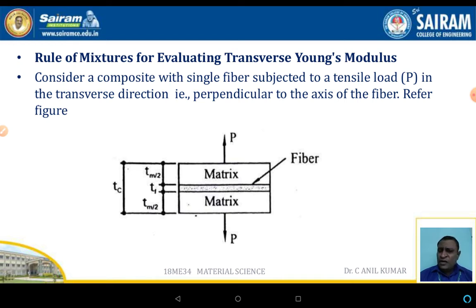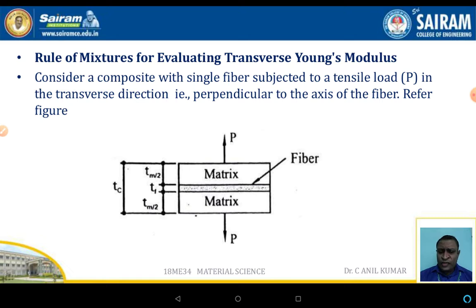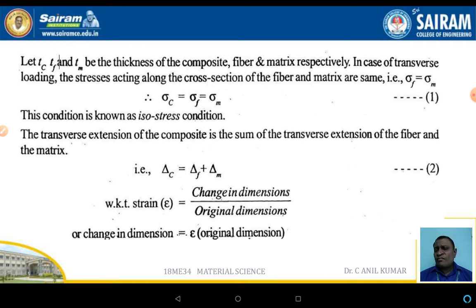Consider a composite material with a single fiber subjected to a tensile load P in a transverse direction, which is perpendicular to the direction of the fiber orientation. The schematic diagram shows two layers of the matrix with one fiber layer in between, where the total thickness is TC. The individual thicknesses of the matrix are TM/2 and TM/2, and TF is the thickness of the fiber.